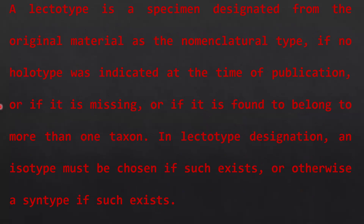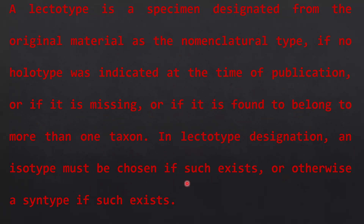Then, the lectotype. A lectotype is a specimen designated from the original material as the nomenclatural type if no holotype was indicated at the time of publication, if it is missing, or if it is found to belong to more than one taxon. In lectotype designation, an isotype must be chosen if one exists, or otherwise a syntype if one exists.